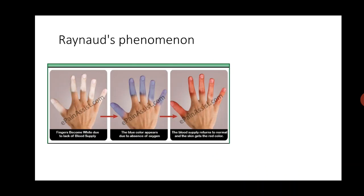Raynaud's phenomenon can occur independently or as part of the CREST syndrome. It has three phases: the distal ends of the fingers first become pale due to sudden occlusion or narrowing of the blood vessels and complete cessation of blood flow. Then partial opening of the blood vessel leads to flow of deoxygenated blood, giving the fingers a blue color. Afterwards the blood vessels fully open and blood rushes in, giving rise to a red color. This transition from pale to blue to red is known as Raynaud's phenomenon.